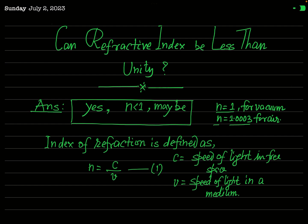But can you say that the minimum value of refractive index is 1? It means refractive index cannot be less than 1. The answer is no. The refractive index may be less than 1.